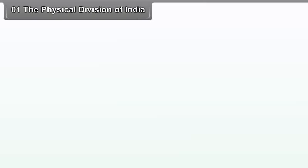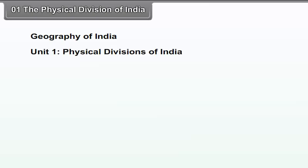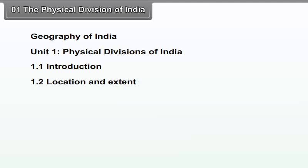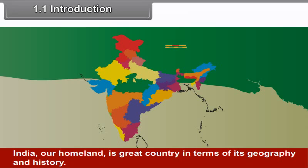Chapter 1 – The Physical Divisions of India. We will study the following points in this chapter: 1.1 Introduction, 1.2 Location and Extent, 1.3 Surrounding Nations, 1.4 Process of Identification of a Region, and 1.5 Physical Divisions.